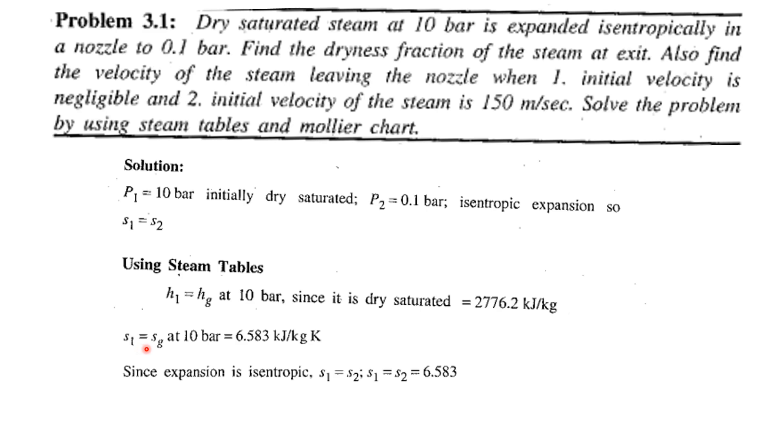Now, s1 is equal to sg at 10 bar. In the same row you can find sg value corresponding to 10 bar, that you take it as s1. Since the expansion is isentropic, s1 equal to s2 equal to 6.583 kilojoule per kilogram Kelvin.